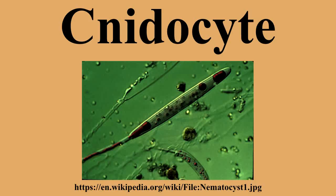allowing the sessile Snidarian to devour it. Discharge mechanisms: a capsule stores a large concentration of calcium ions, which are released from the capsule into the cytoplasm of the Snidocyte when the trigger is activated. This causes a large concentration gradient of calcium across the Snidocyte plasma membrane. The resulting osmotic pressure causes a rapid influx of water into the cell.